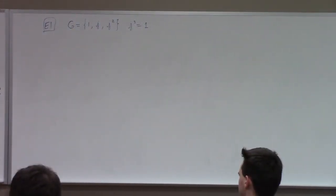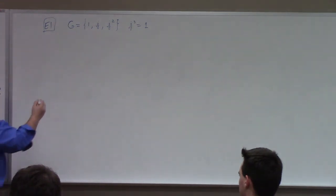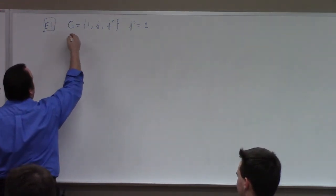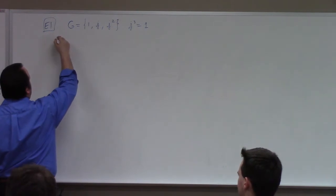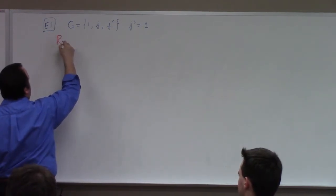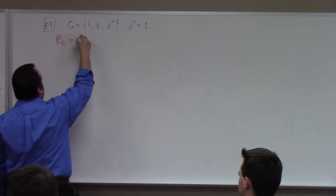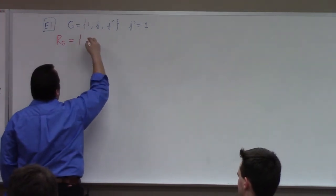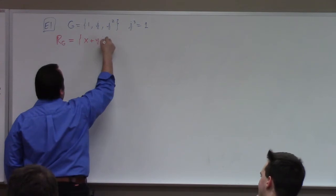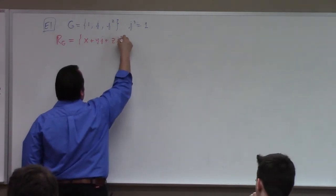Our typical notation was A, 1, A, A squared — I'm using J. Anyway, we can form the group algebra. I think the notation would be R sub G, whatever you want to denote that thing.